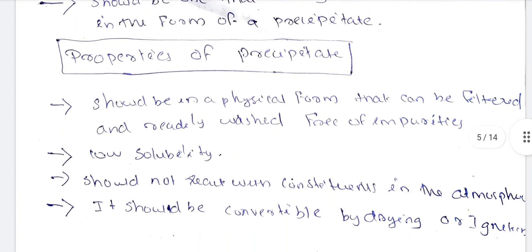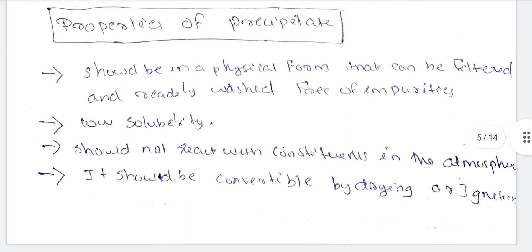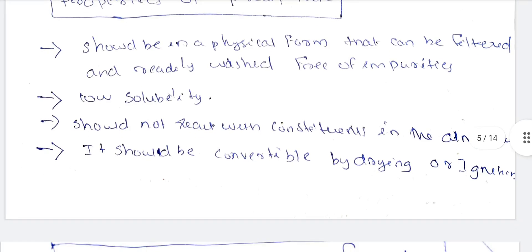Properties of precipitate: It should be in a physical form that can be filtered and readily washed free of impurities. It should have low solubility so it can be easily separated. It should not react with constituents in the atmosphere. It should be convertible by drying or ignition — conversion to a known form must be possible.